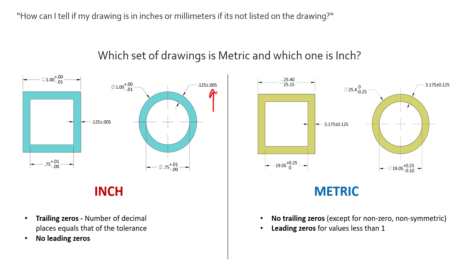So for example we see this one here, our tolerance is 0.005. That's three decimal places and so our dimension also has to have three decimal places.